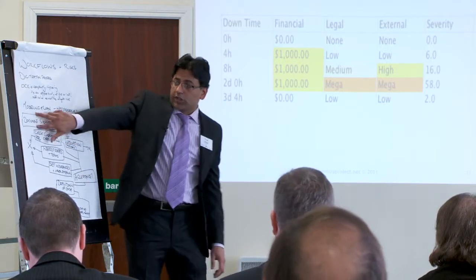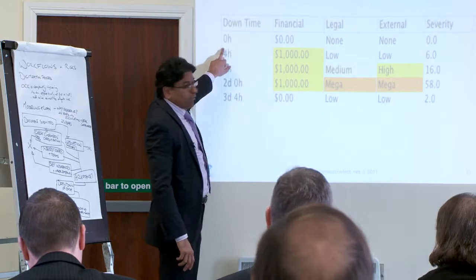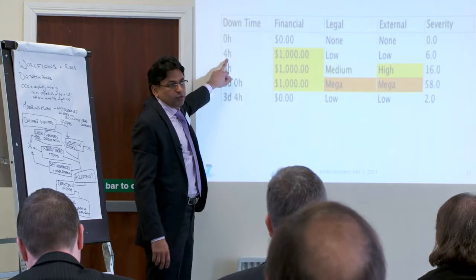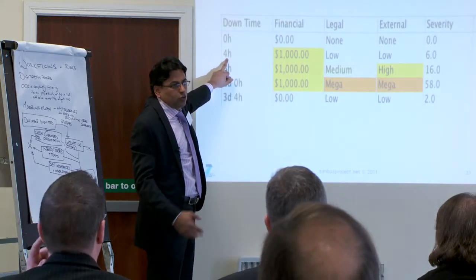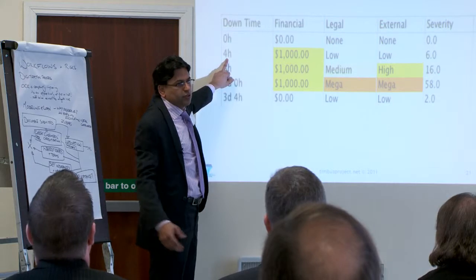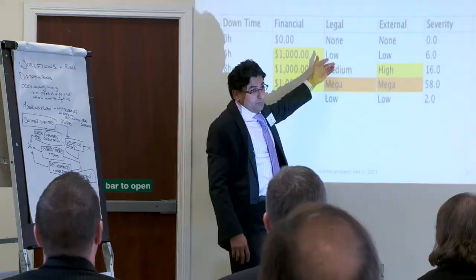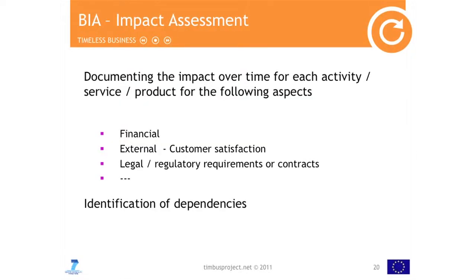What happens if this activity is not working for zero hours — meaning it's running — versus four hours, where the bank is not operating for this particular activity? They're losing customers, so they can compute some financial losses, some legal ones if they're a bank, and some external impact — for example, the customer becoming unhappy and going to some other bank to get loans. For eight hours, for two days — and there is some particular point where, if you are not back up and running, you are simply out of business.